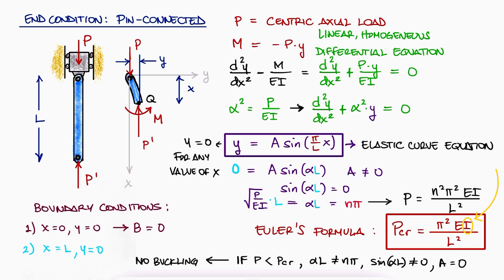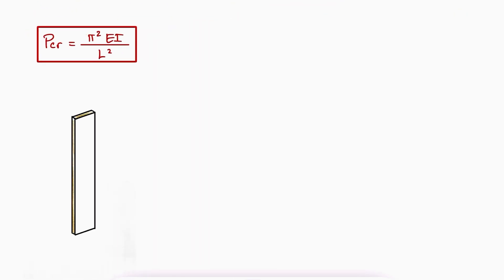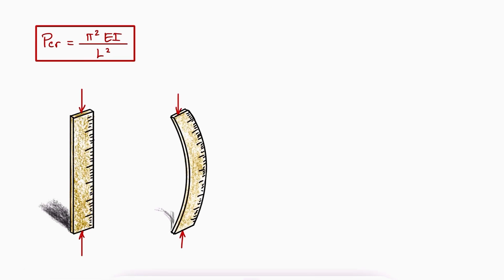The second moment of area I will be the lowest, meaning that the column will buckle over the axis that has the lowest I value. For example, a ruler under compression would not buckle right or left, but front or back.